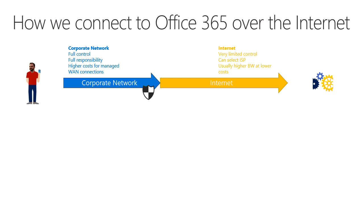When I talk to customers, sometimes I get the impression that people think that connecting to Office 365 and Microsoft Teams at a network layer looks a little bit like this: on one side is the corporate network where you have full control and full responsibility over the connections, then you connect to the internet to reach the service. At the internet, we have only limited control — we can select the ISP, usually have a bit higher bandwidth, but we don't have end-to-end quality of service or guaranteed delivery that we get from a managed network.